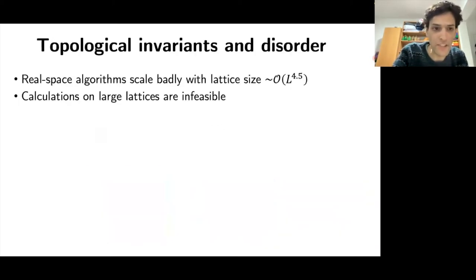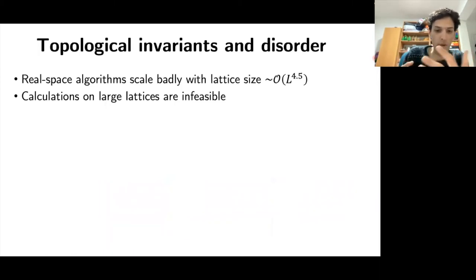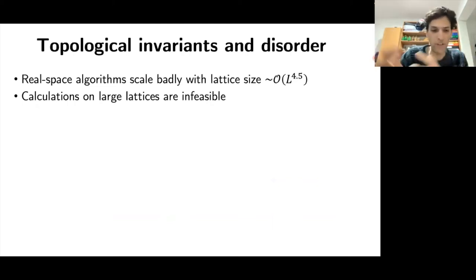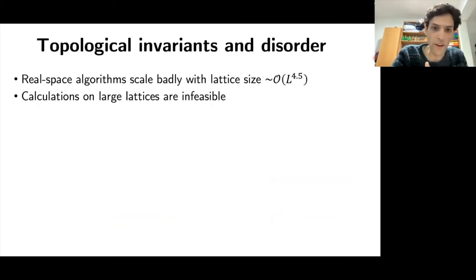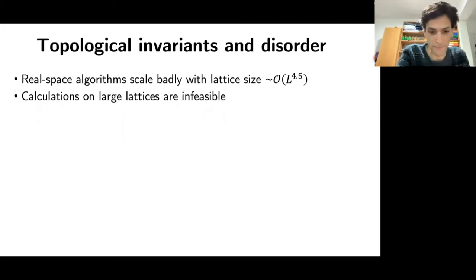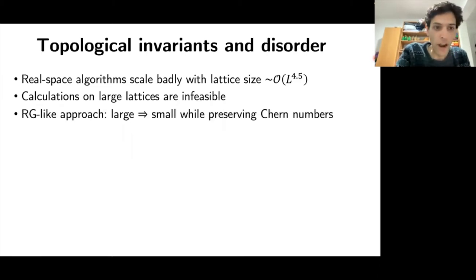It turns out to be a very challenging task. Real-space algorithms try to do an inverse Fourier transform, which requires fully diagonalizing the Hamiltonian. For a 2D system with linear dimension L, you have to diagonalize an L² × L² matrix, which is very inefficient — you cannot really use it on very large lattices.